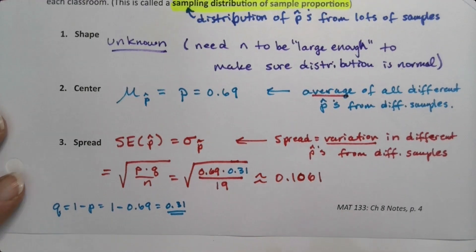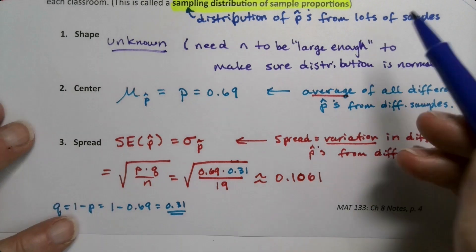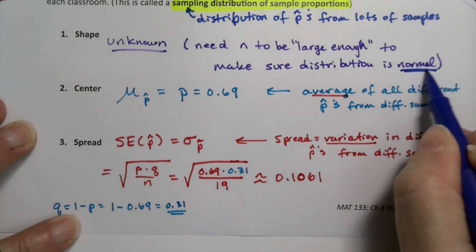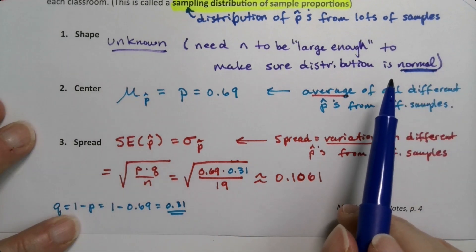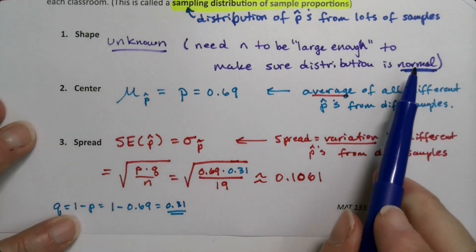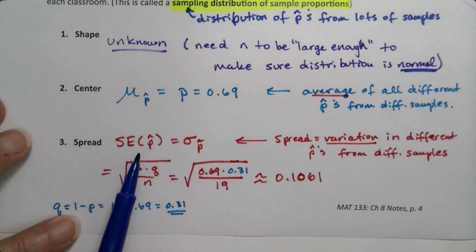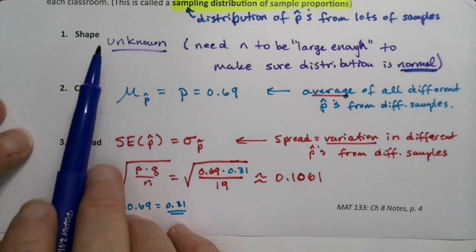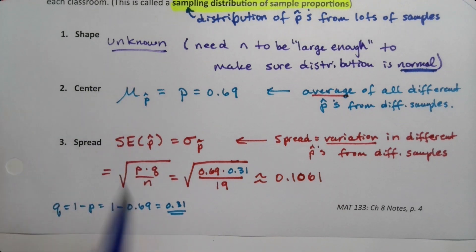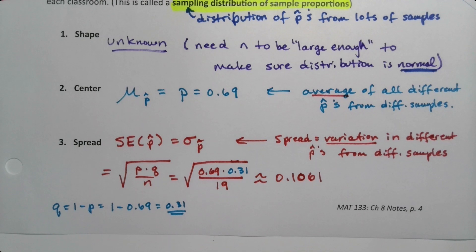We want the distribution to be normal if we can manage it. If it is, the center will be P and the spread will be the standard error. These three things are only true if we can meet the conditions for the central limit theorem, which we'll be getting to in just another page or two.